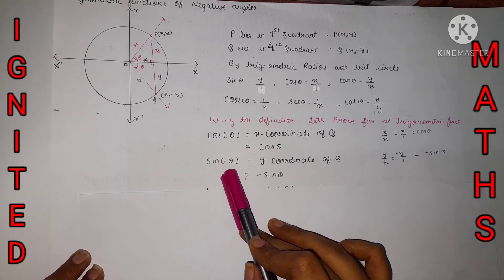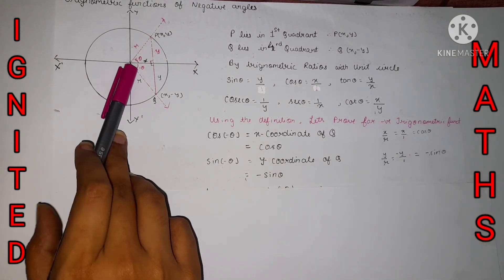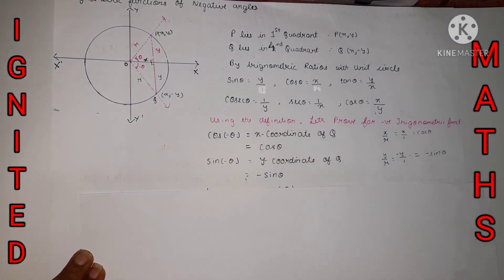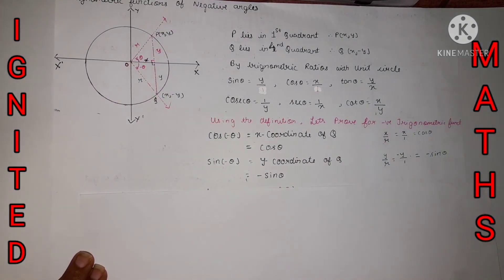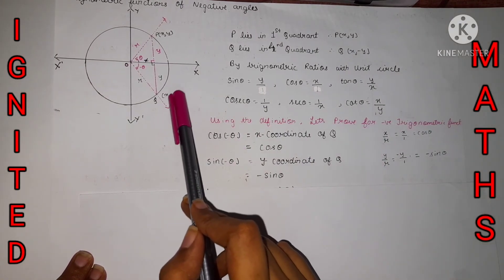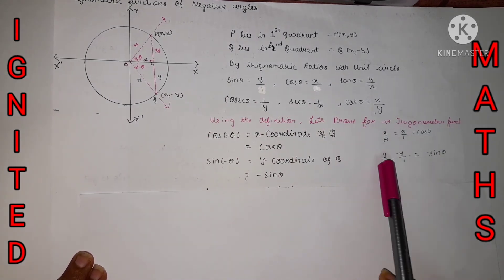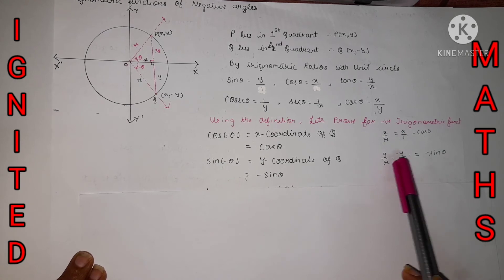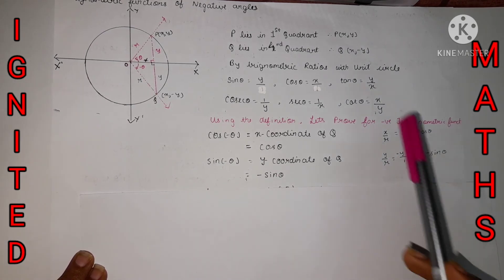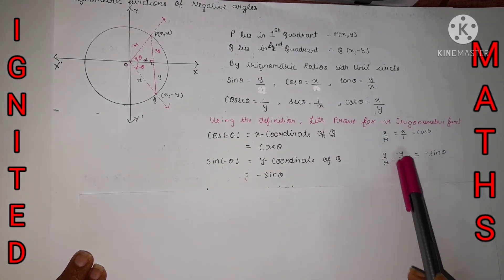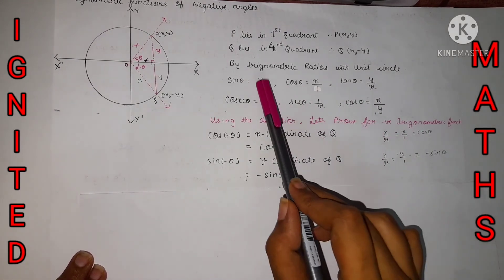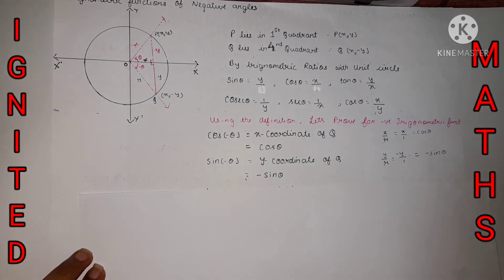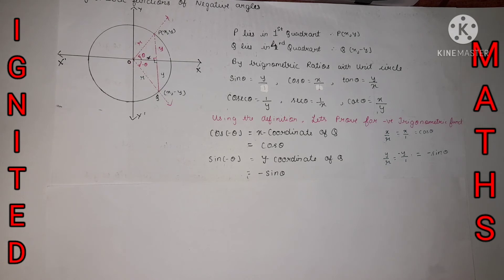For sine of minus theta: the formula is opposite over hypotenuse, so the opposite side is y and the hypotenuse is r. However, at the fourth quadrant the y-coordinate is negative, so we must take minus y. Therefore sine of minus theta equals minus y over 1 equals minus y. Comparing with sine theta equals y over 1, the only difference is the negative sign. So we have proved that sine of minus theta equals minus sine theta.